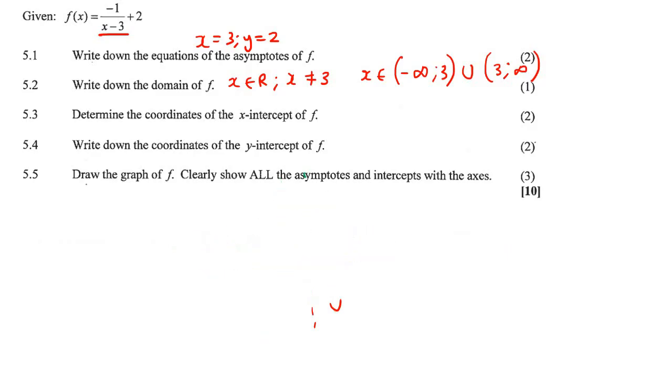And range works exactly the same. But with range, you just go from the top to the bottom or bottom to top, and then you see if you can go all the way. For the next question, we have to determine the coordinates of the x-intercept. So remember to find an x-intercept, that's where you always make y equal to 0. So we go to the original equation and we make y equal to 0.